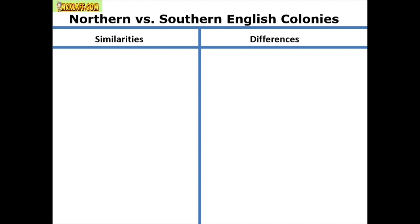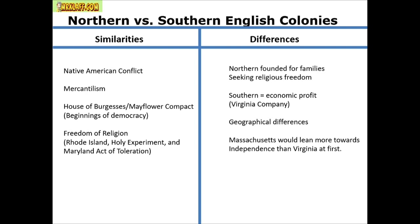Comparing Northern and Southern colonies: similarities include Native American conflict, mercantilism, and the beginnings of democracy — the Mayflower Compact in the North, the House of Burgesses in the South, the Fundamental Orders of Connecticut, New England town meetings, religious freedom in Rhode Island under Roger Williams, William Penn's holy experiment in Pennsylvania, and the Act of Toleration in Maryland. Differences: the North was mostly settled for religious freedom; the South, like the Virginia Company, was for economic reasons like planting tobacco.